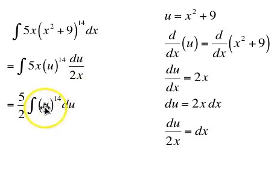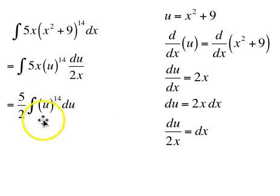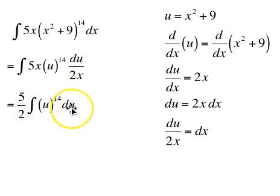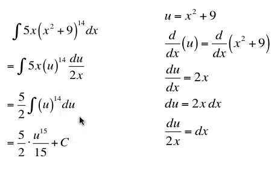We're only allowed to have one variable here, and that's all we have. So the antiderivative of u to the 14th with respect to u would be u to the 15th over 15, or u to the 14 plus 1 over 14 plus 1.